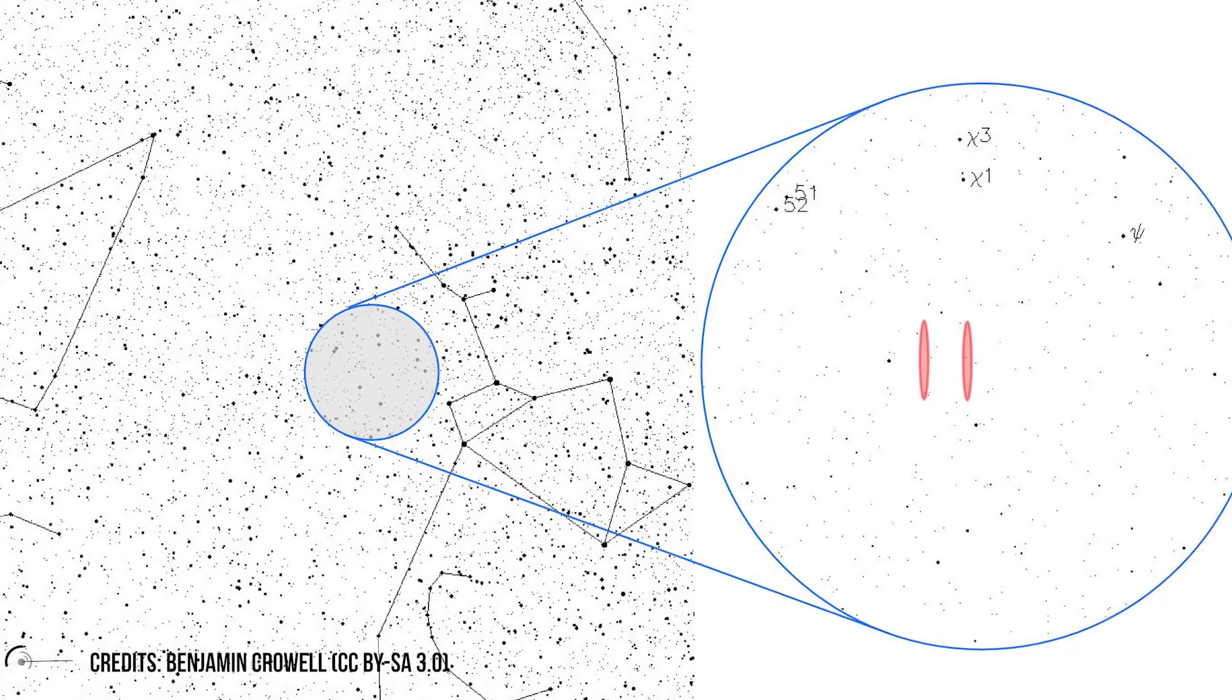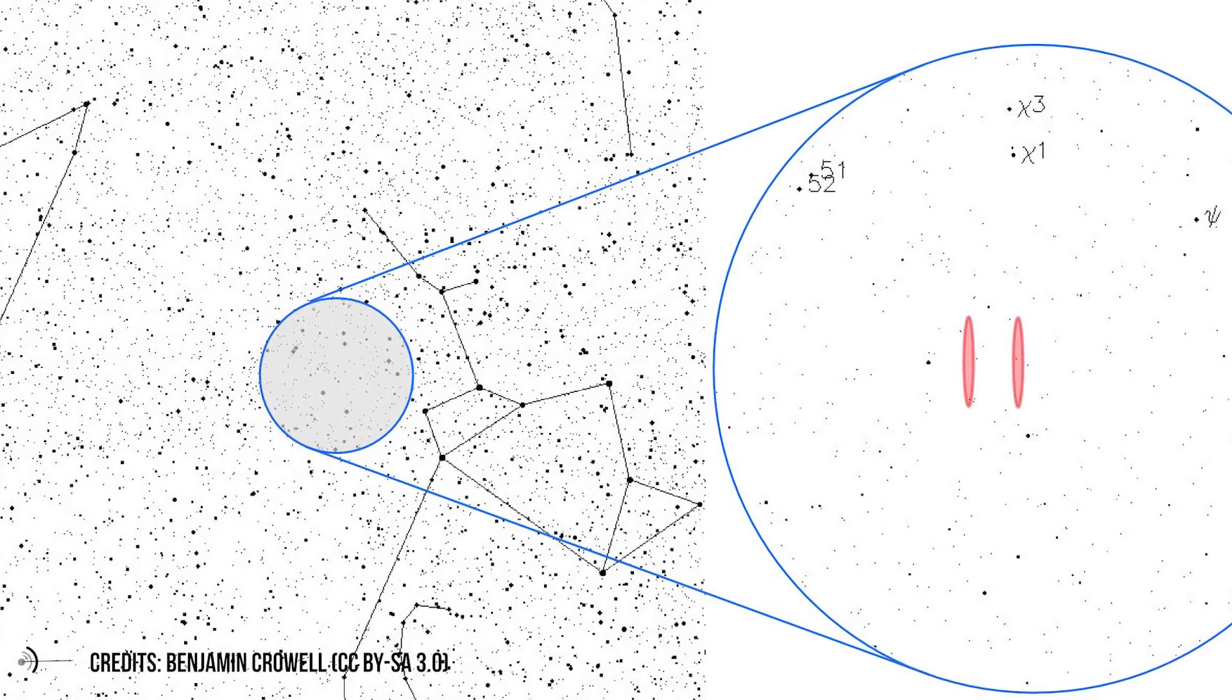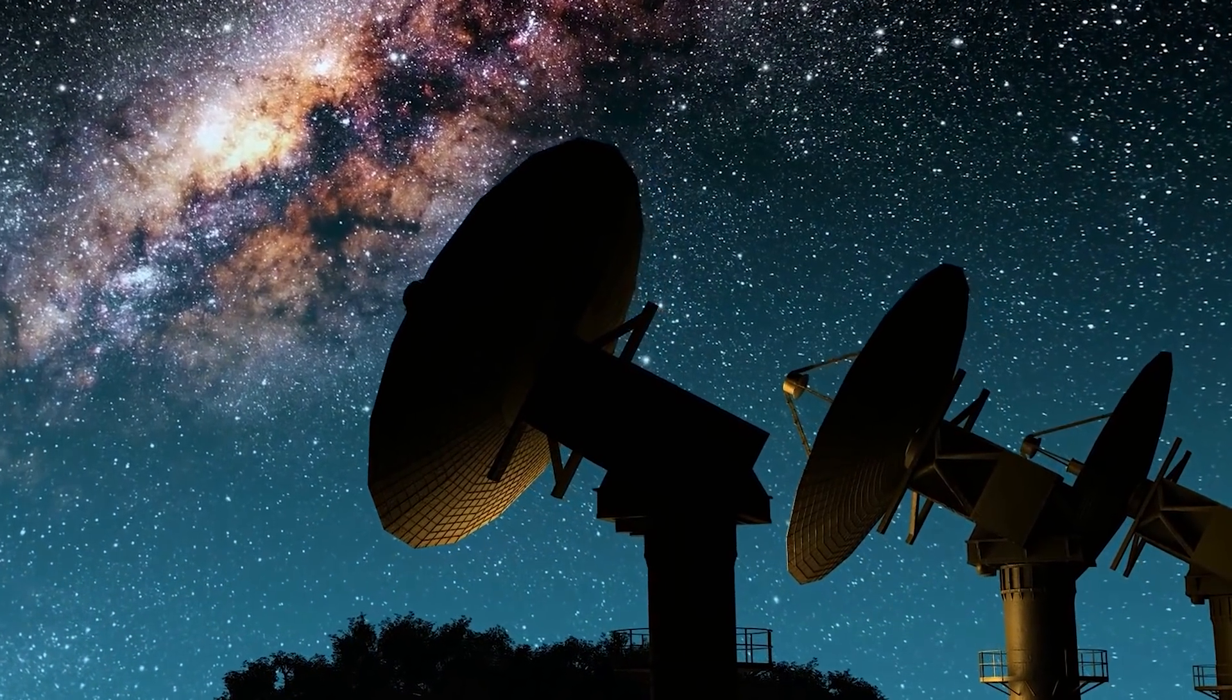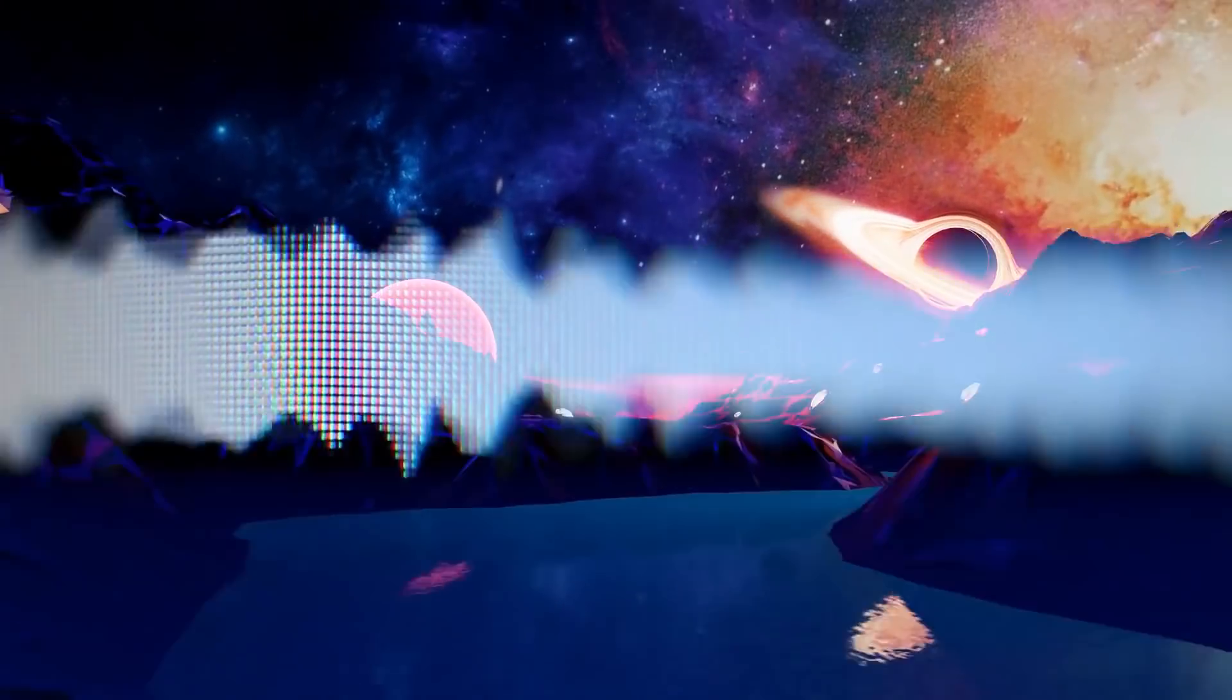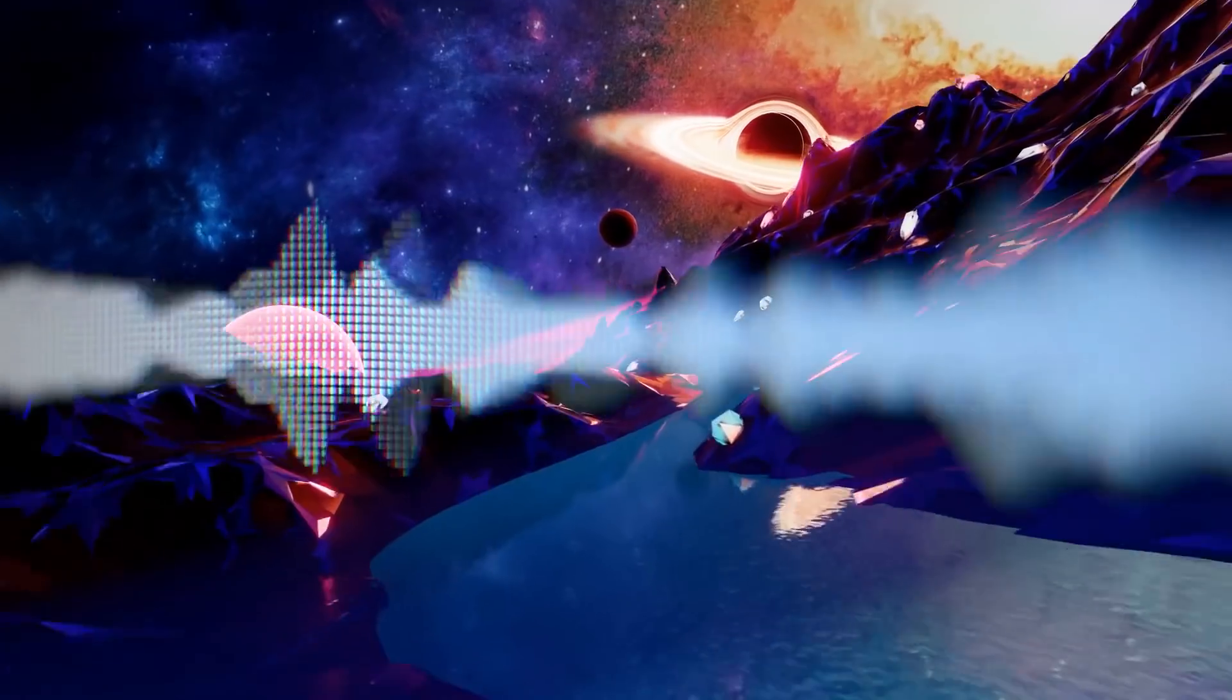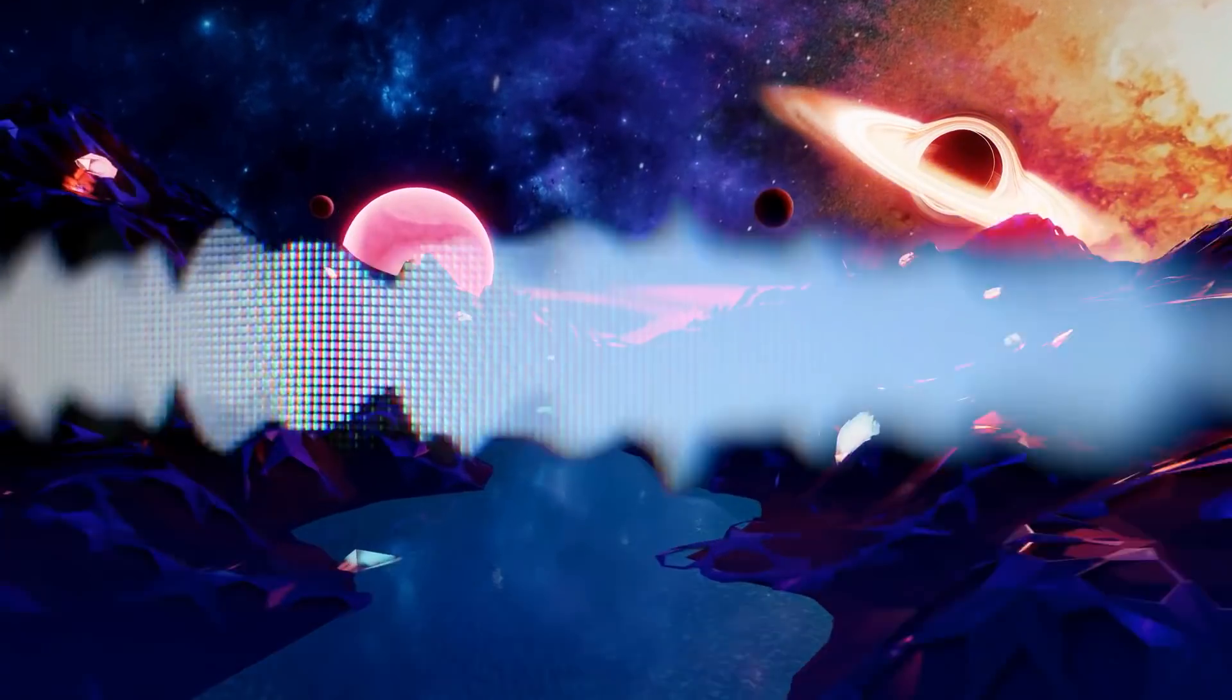The WOW signal is the name given to a strong narrowband radio signal that was detected by astronomer Jerry R. Emin on August 15, 1977, while working on the SETI extraterrestrial life search project with Ohio State University's Big Ear radio telescope. The characteristics of the signal hinted at an origin outside the Earth and the solar system. Lasting 72 seconds, that emission has never been fully explained, and it was never even possible to identify the exact point from which it started.